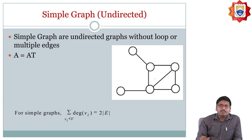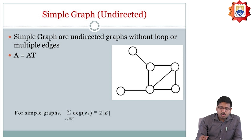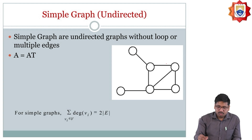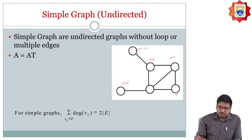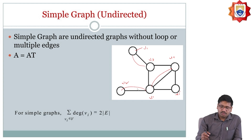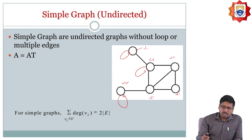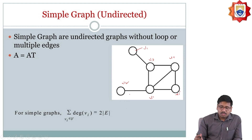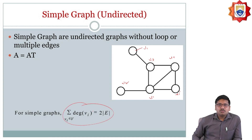The next one is a simple graph. A simple graph is an undirected graph without loops or any multiple edges — then it should be called as a simple graph. The vertices here are A2, A3, A4, A5, and A6. There are no multiple edges — if I draw like this, then it should not be a simple graph. Also, a loop is not going to be present. If the graph does not have these things, it should be a simple graph.